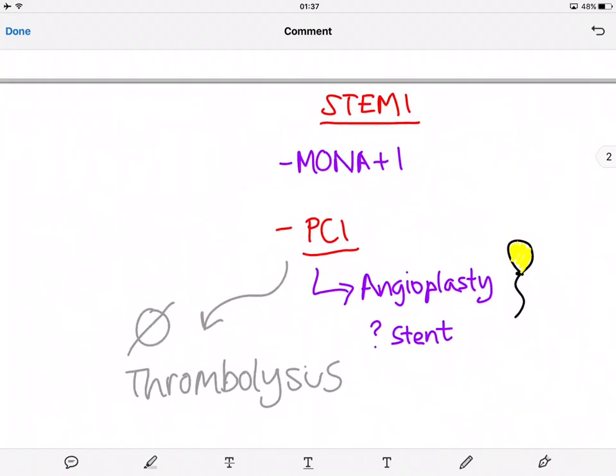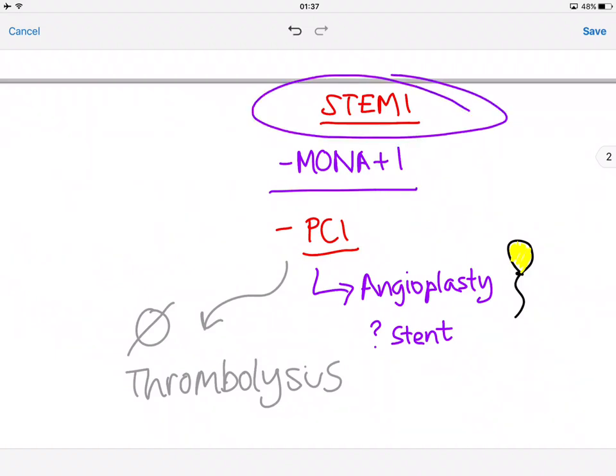For a STEMI, the mnemonic is MONA plus one. STEMI is the dangerous one that needs immediate intervention and immediate management. It's morphine, oxygen, nitrate, aspirin plus another antiplatelet, usually clopidogrel. Then they go for immediate PCI.